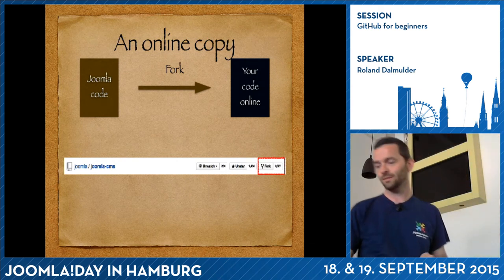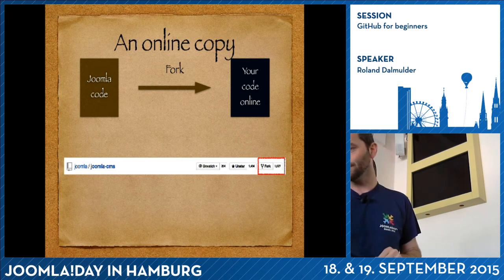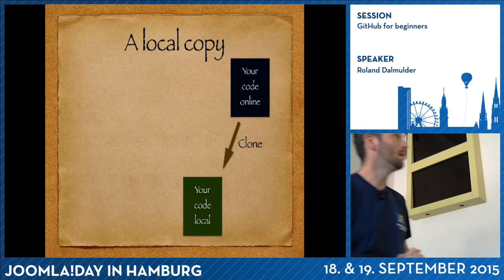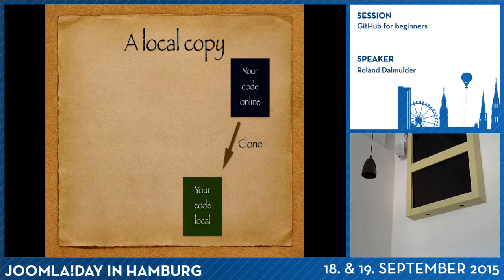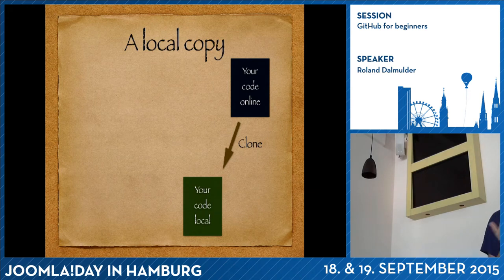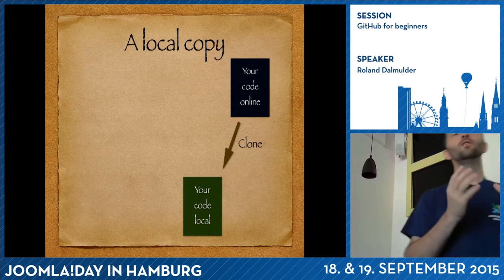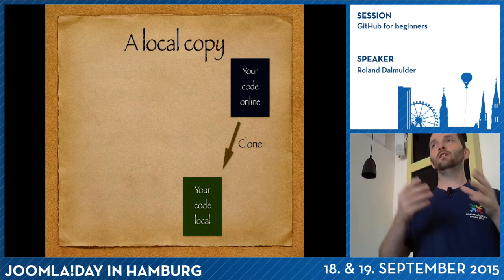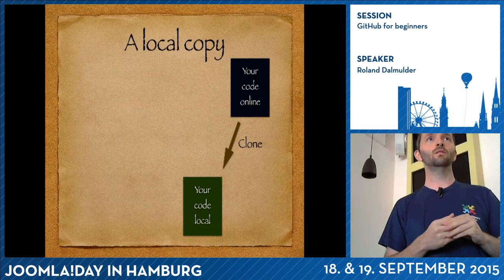I'm sure that number has increased a lot more by now. The next step: you have your copy of the Joomla code and now you want to clone it to your local computer — that's the clone command. It's almost like a fork, but now you're making an exact copy to your own computer, and that's how you can control the code locally as well.